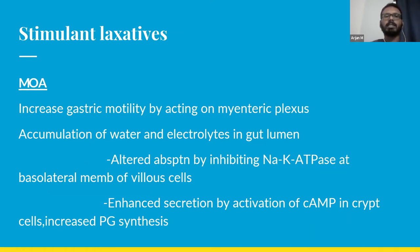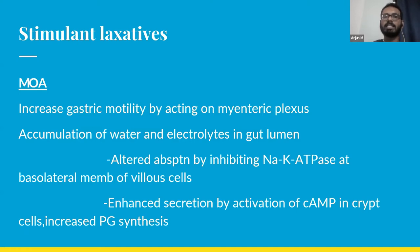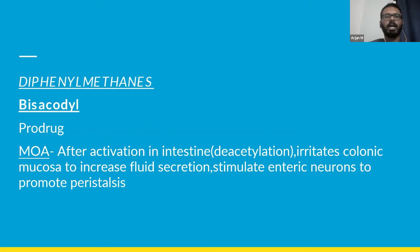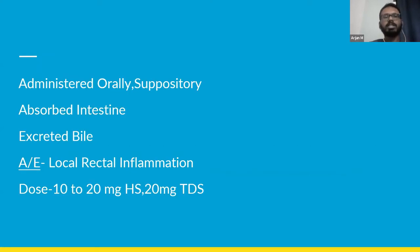The next category is stimulant laxatives. The major mechanism of action of most stimulant laxatives is that they increase gastrointestinal motility by acting on the myenteric plexus. There is also a mechanism involving accumulation of water and electrolytes in the lumen, either by inhibiting sodium-potassium ATPase at the basolateral membrane, which alters water and electrolyte absorption, or by increased prostaglandin synthesis or activation of cyclic AMP from crypt cells, causing enhanced secretion of water and electrolytes. Under anthraquinones, bisacodyl comes — it is a prodrug. After being administered, it gets activated in the intestine by deacetylation. After activation, it irritates the colonic mucosa to increase fluid secretion and stimulates enteric neurons to promote peristalsis. A major advantage of bisacodyl is that it can be administered both orally and as a suppository.